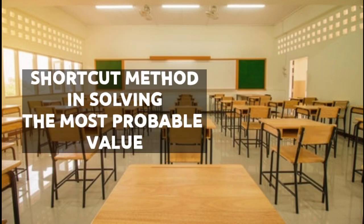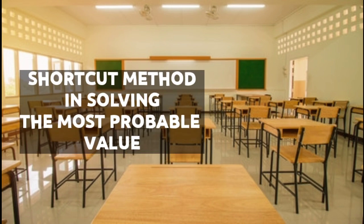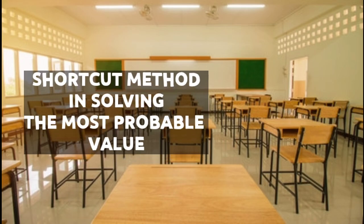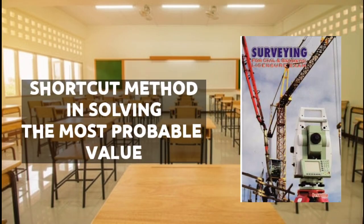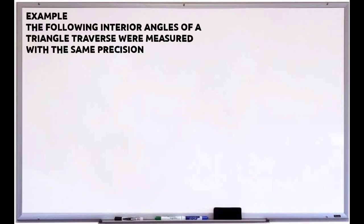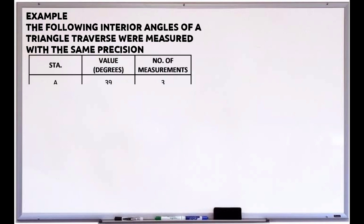I'll teach you a shortcut method in solving the most probable value. The example that I'm going to use is from the surveying book by Besabilia. The example is, the following interior angles of a triangle traverse were measured with the same precision. You can see in the shown table,